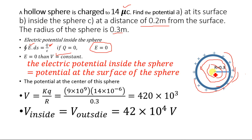The electric potential at the surface of the sphere is V equals kq divided by r, where r equals 0.3 meters, the radius of the sphere. Here k is equal to 9 times 10 to the power 9, and q the charge is given as 14 micro coulombs, which is 14 times 10 to the power minus 6 coulombs, divided by the radius of 0.3 meters. Solving this gives 420 times 10 to the power 3 volts, which is the electric potential at the surface and also inside the sphere.